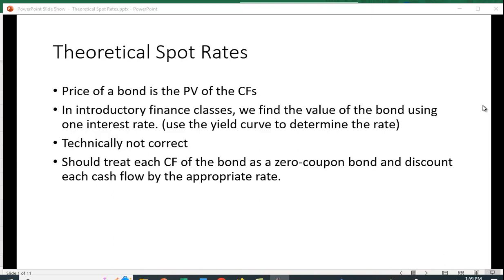In introductory finance classes, we find the value of the bond by using one interest rate. We just pick an interest rate, for example, off the yield curve for the length of the bond, and then we use that rate to discount every single cash flow. But technically, this isn't correct.